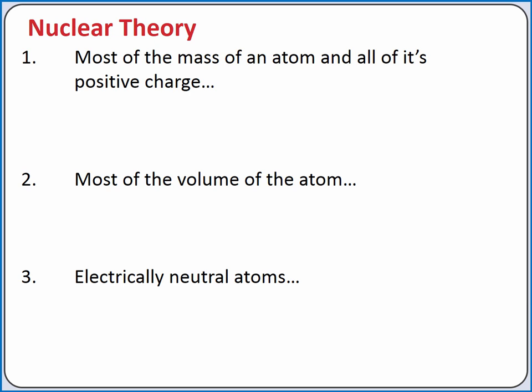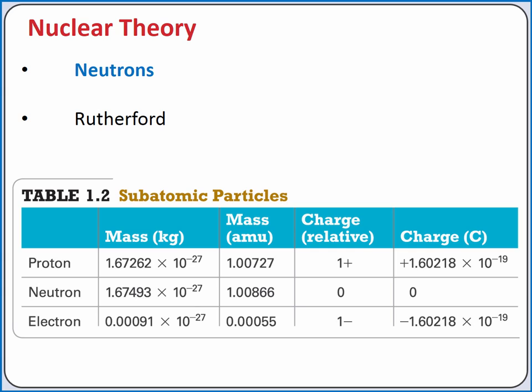With the nuclear model of the atom, most of the mass of an atom, and all of its positive charge, is located in a very dense core called the nucleus. So most of the volume of the atom is just empty space, with the very small electrons dispersed as a negative cloud around the nucleus. Electrically neutral atoms have the same number of protons, which are positively charged, in the nucleus as they have electrons. Subsequent work by Rutherford showed that there are also neutral particles in the nucleus called neutrons, which helped account for additional mass in the atom without adding additional positive charge.